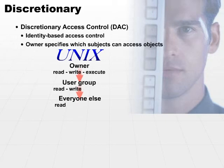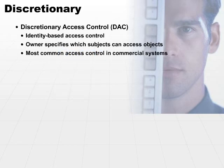Discretionary access control is the most common access control in commercial systems — it's the one you're going to run into more often than any other type in the commercial environment. Other types of access control are a little bit more prevalent in government-based systems, so let's look at those.